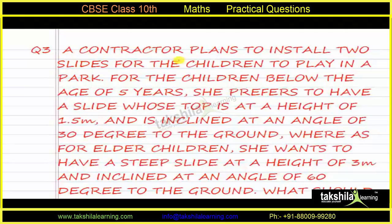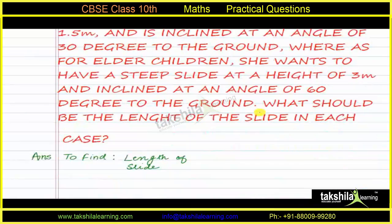Question number three: A contractor plans to install two slides for children to play in a park. For children below the age of five years, she prefers a slide whose top is at a height of 1.5 meters and is inclined at an angle of 30 degrees to the ground. For elder children, she wants a steep slide at a height of 3 meters inclined at 60 degrees to the ground. What should be the length of the slide in each case?